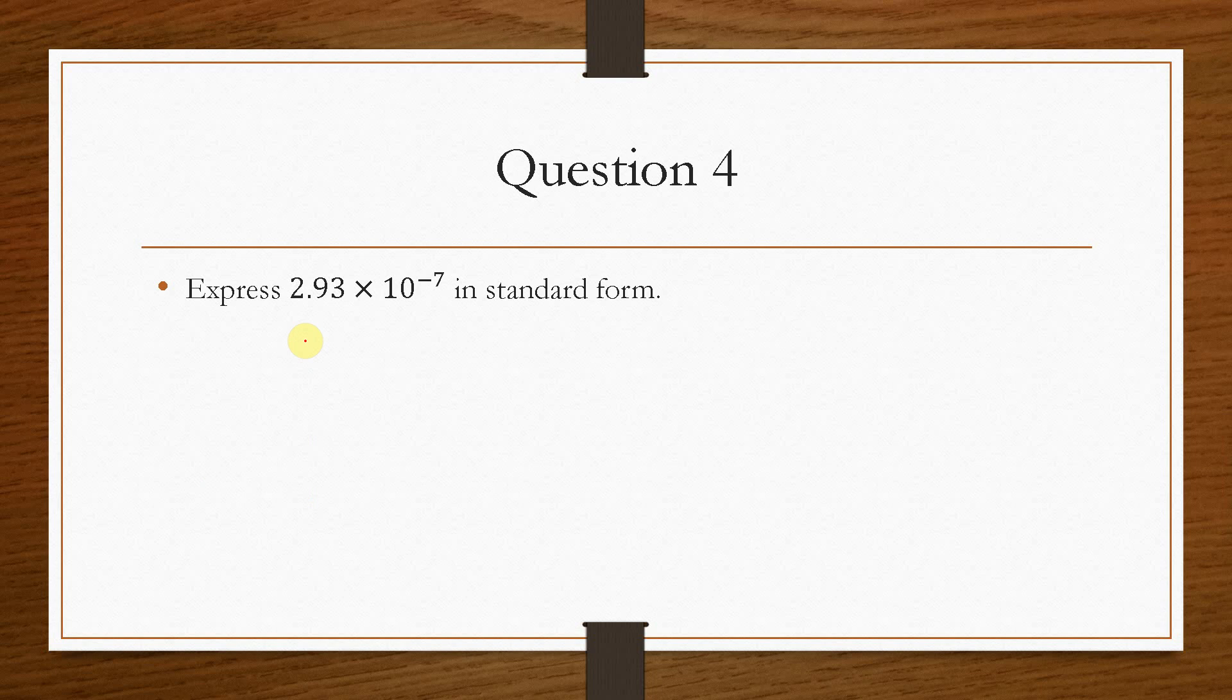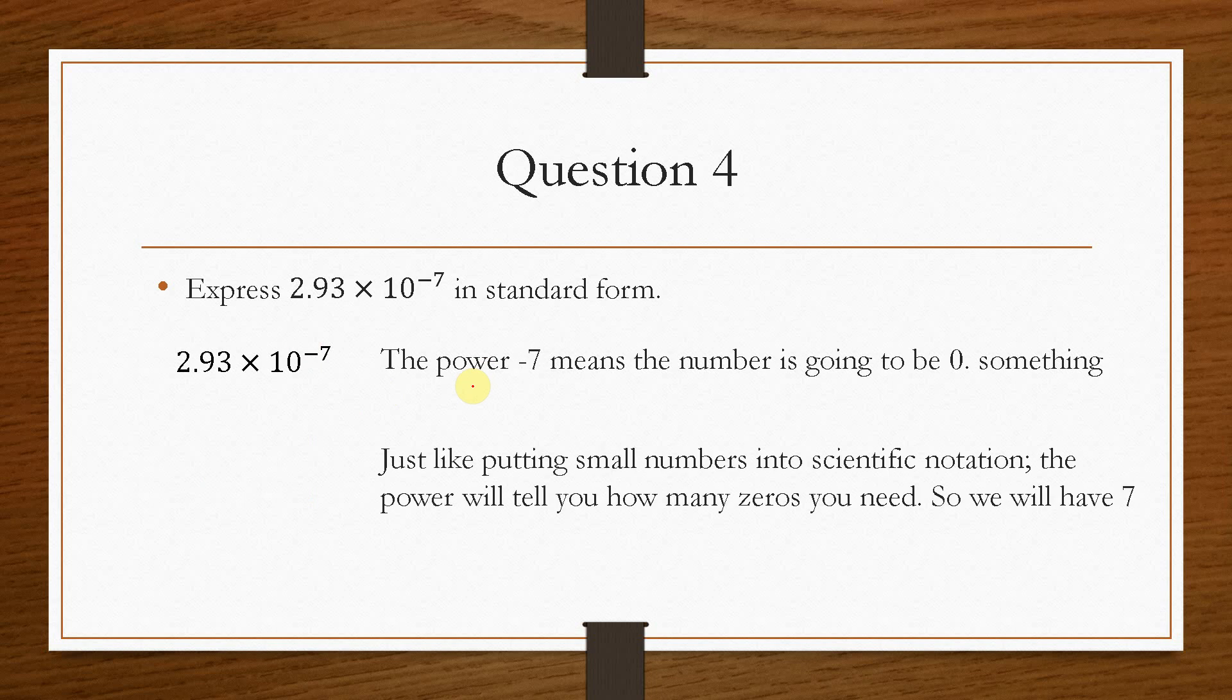And then question number 4 is we're going to do exactly the same thing, but this time with an incredibly small number. So we have 2.93 times 10 to the minus 7. So the power minus 7 means that there is going to be a number such as 0 point something. That's what the negative here implies. We have a very, very small number. Now, just like putting the small number into scientific notation, whereby we counted the number of 0s, we can do exactly the same thing here. Because this tells us how many 0s we are going to have in our system. So we're actually going to have 7 0s. But just remember, between the first two 0s or the left-hand side 0s, there has to be a decimal place in here. But if you count these, we have 1, 2, 3, 4, 5, 6, 7. So it's as simple as that. We have 7 0s, so it would be 2.93 times 10 to the minus 7.